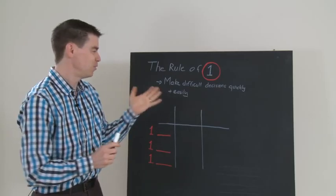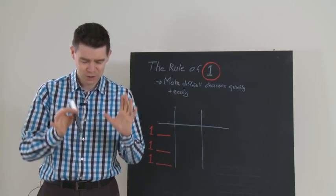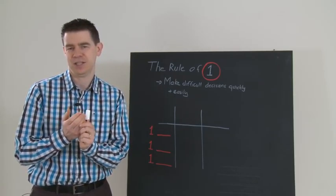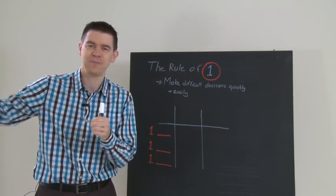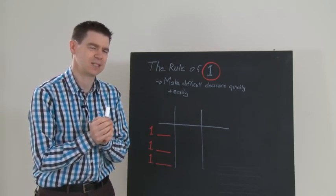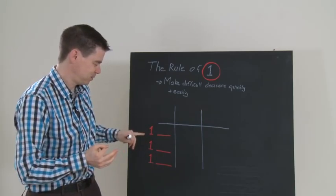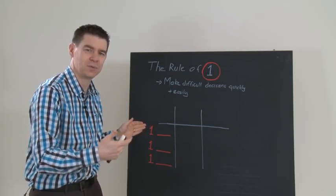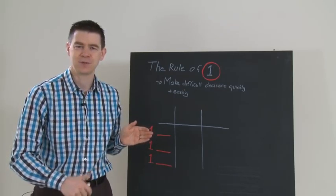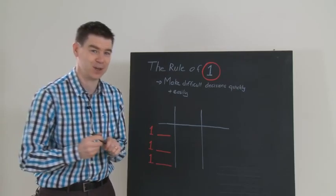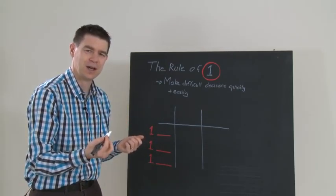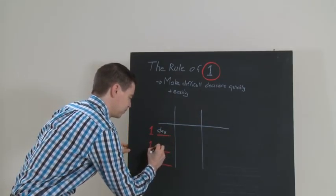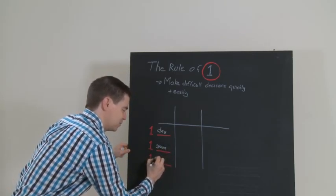The Rule of One is very simple. You are here right now and you're going to make a decision. A decision has consequences over a time frame in the future. The Rule of One says we're going to pick three time frames—could be one minute, one week, one month, one year, one decade. For me, I chose one day, one year, and one decade—10 years.